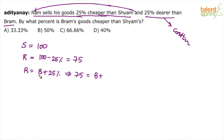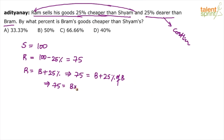25% dearer than Bram. So if Bram sells for value B, Ram will sell it for B plus 25% of B. So 75 equals B plus 25% of B. Simplify: 75 equals B into 125%, and 125% can be taken as 5/4. So 75 equals 5/4 × B, which gives B = 60. So the value for Bram is 60 rupees.